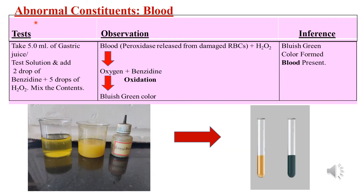For the test for blood, which can be checked in any body fluid, we take 5 ml of gastric juice and add two drops of benzidine and five drops of hydrogen peroxide, then mix the contents. The blood peroxidase released from damaged RBCs catalyzes the reaction between hydrogen peroxide and benzidine; the oxygen liberated oxidizes benzidine, and a bluish-green color is seen. This bluish-green color confirms the presence of blood. This is known as occult blood — not visible to the naked eye but detectable by the benzidine test.